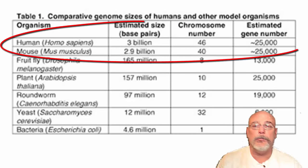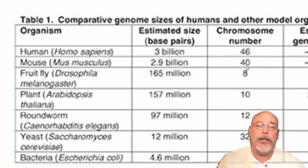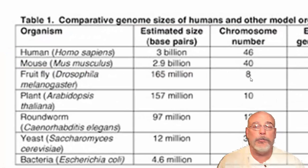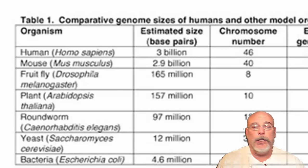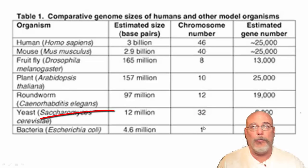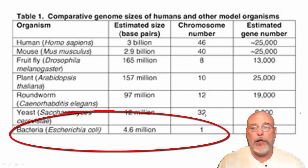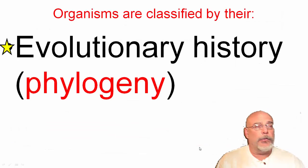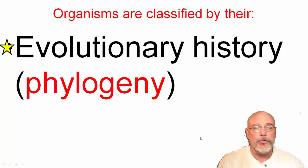Your chromosomes are the directions or instructions on how to make cells for your body. Different organisms have different numbers of chromosomes. Humans have 46 total chromosomes — 23 chromosome pairs. A mouse has 40 total, so 20 pairs. A fruit fly has only 4 chromosome pairs. Bacteria, a very simple prokaryotic organism that doesn't have advanced membrane organelles, has only one chromosome.